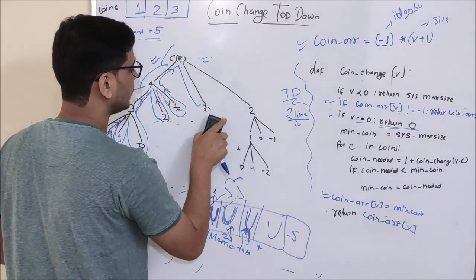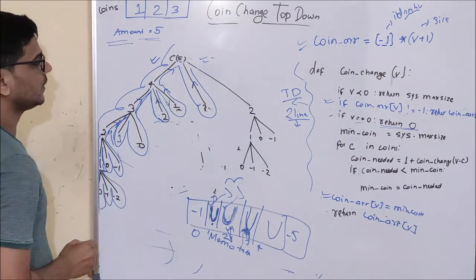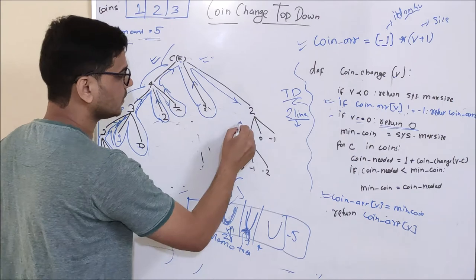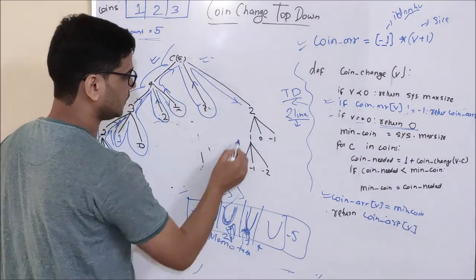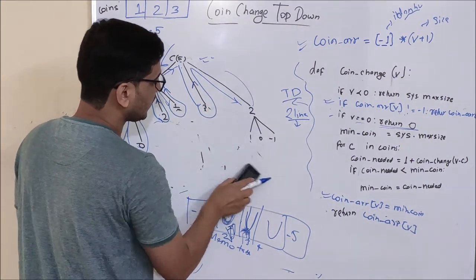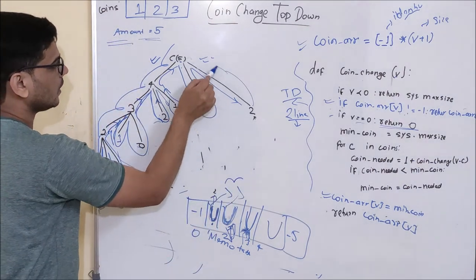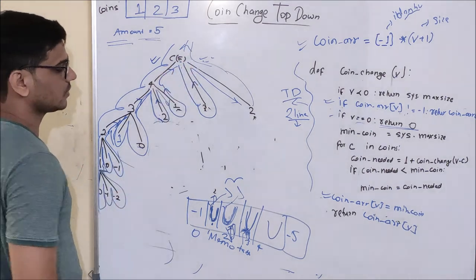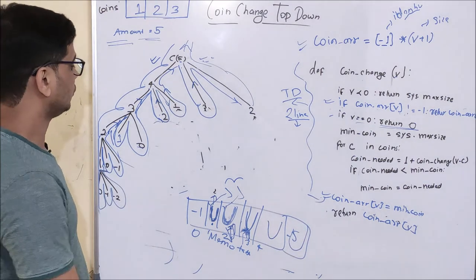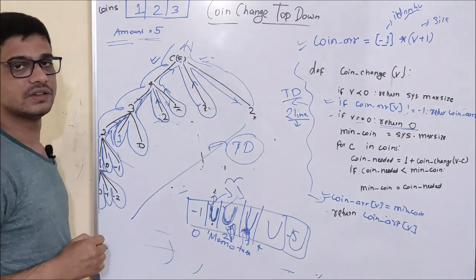We will directly take our value from the memo table and return this value for C(5). Then C(5) will call C(2). As you can see here, it is updated — so it will return its value directly from the table, and this whole subtree will not grow. Then C(5) will return the actual answer, and prior to that, it is going to update it. So as you can see here, this is my top-down tree. Notice the difference between the recursion tree and the top-down tree.